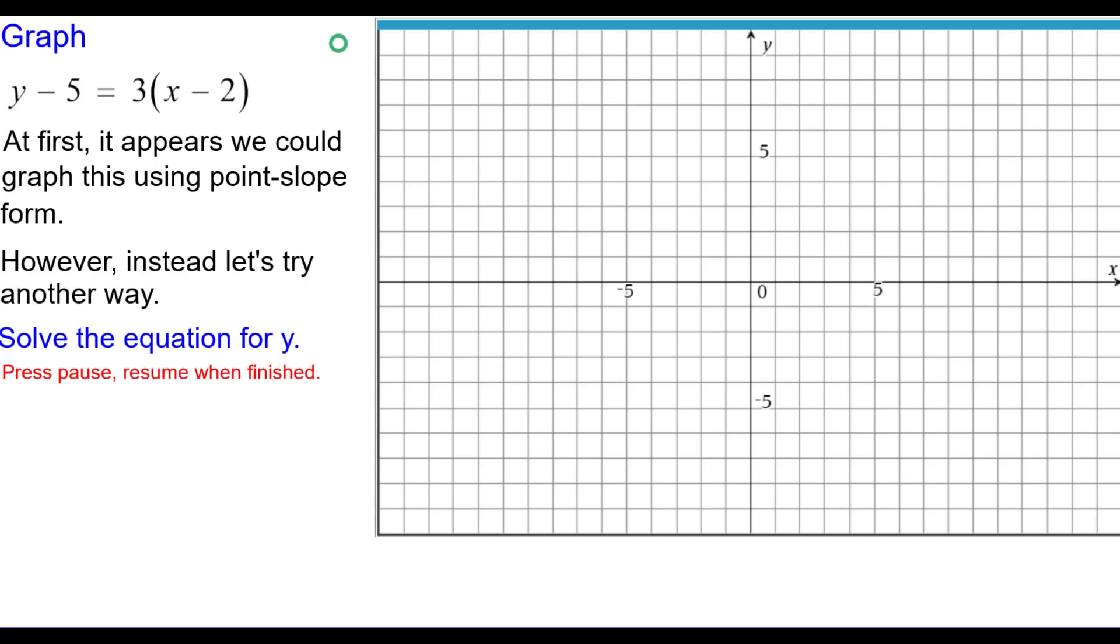So solve the equation for y. Press pause. Resume when you're finished. And by adding 5 to both sides, we get y equals 3 times the quantity x minus 2 plus 5.